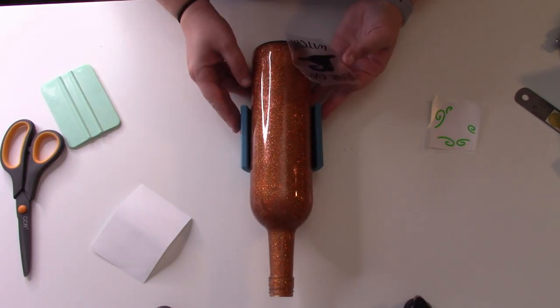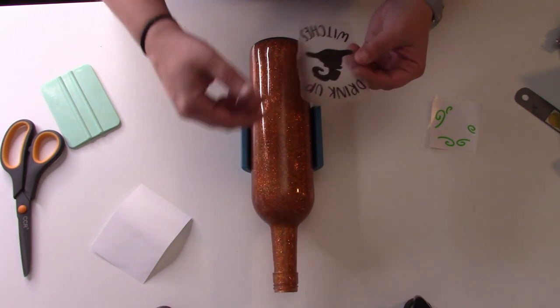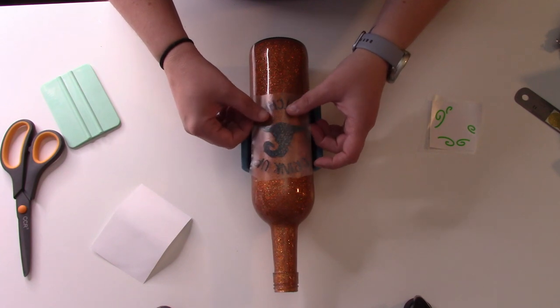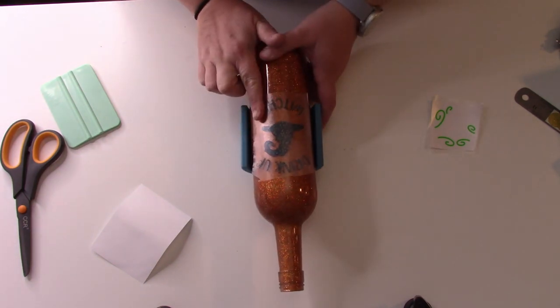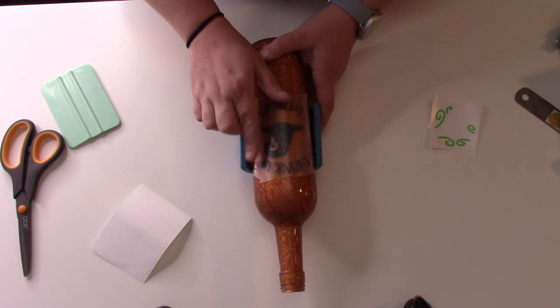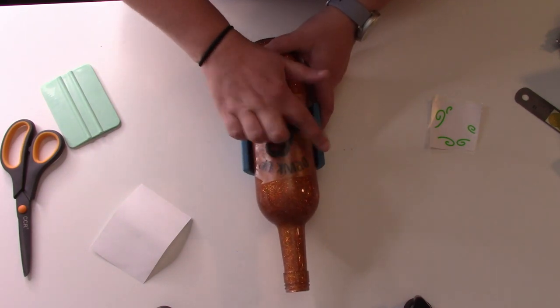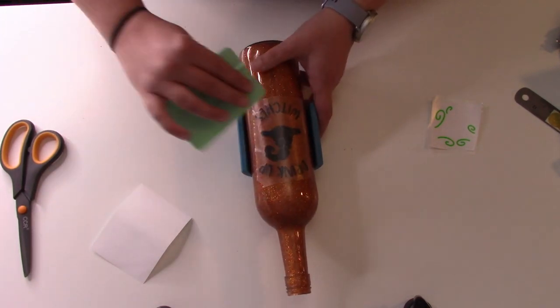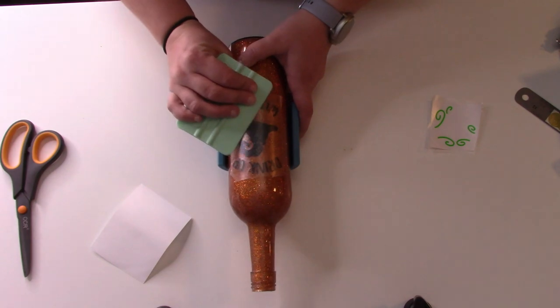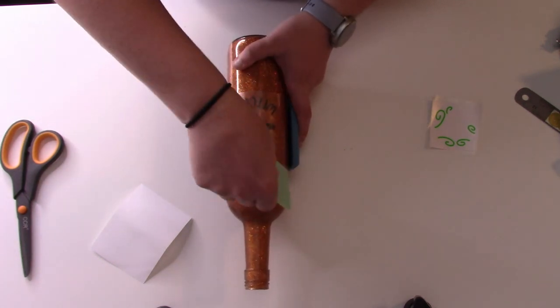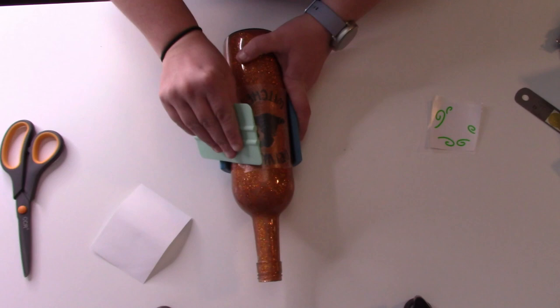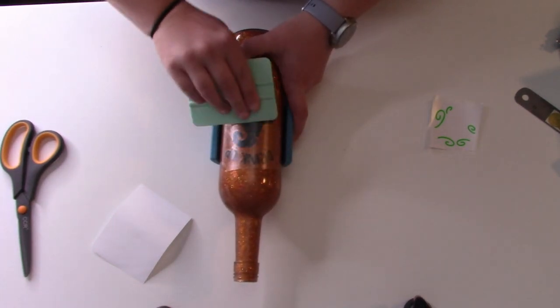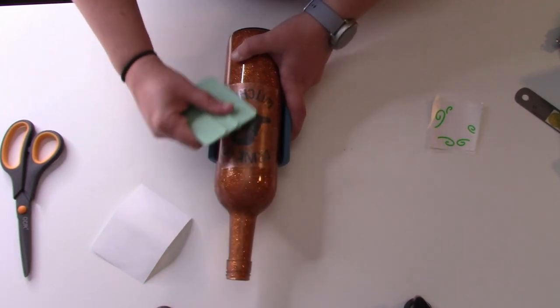Now what I'm going to do is kind of figure out whereabouts on my bottle I want my decal. There's no right or wrong place to put this, but you just want to try to make sure it's good and straight. And then just lay it down. I do this pretty gently with my finger just in case I see anything that maybe isn't in quite the right spot. Wine bottles are really easy to add decals to because they're nice and smooth. They've got a good curve to them. So now what you want to do is take your squeegee and run that all over your decal.